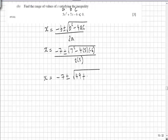So minus 6 makes the whole thing plus 120, all over 10. That equals minus 7 plus or minus the root of 169 over 10, giving us two values of x.